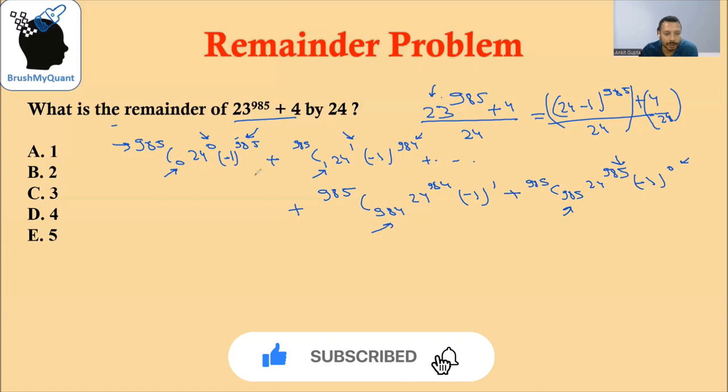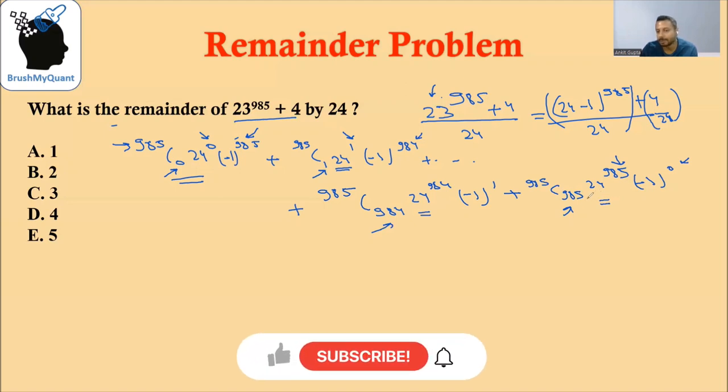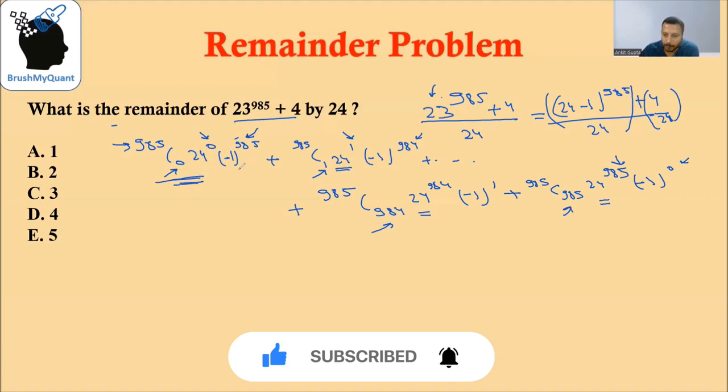If you look at all the terms except the first one, they are actually some power of 24. It is 24 raised to 1, this is 24 raised to 984, this is 24 raised to 985. Whenever you divide these numbers by 24, the remainder will be 0. So our problem is reduced to what is the remainder when the first term is divided by 24.